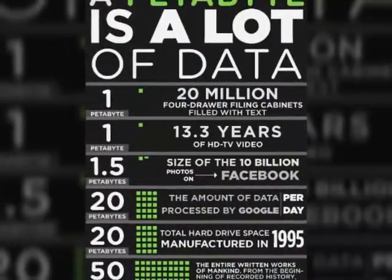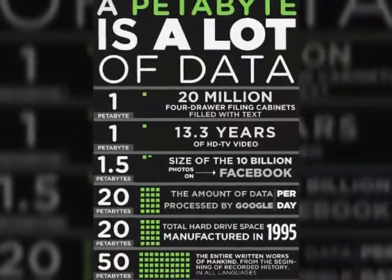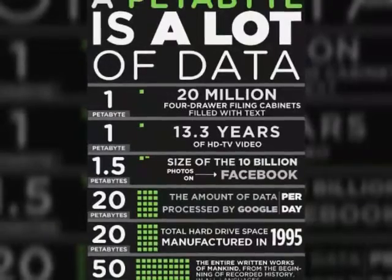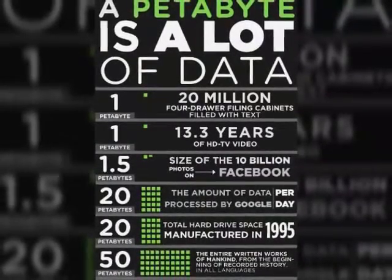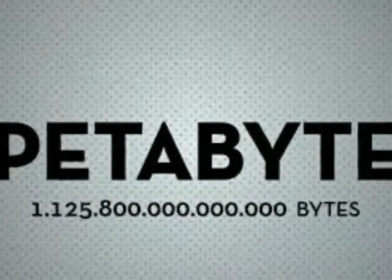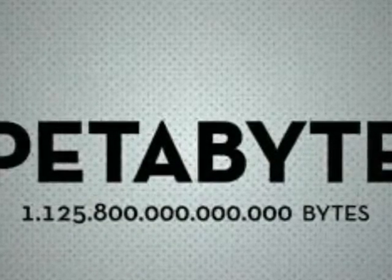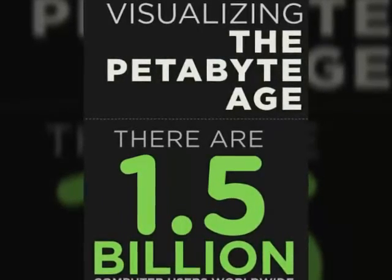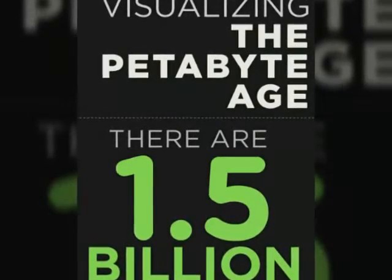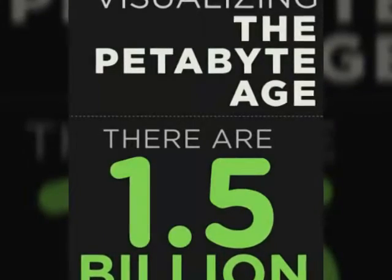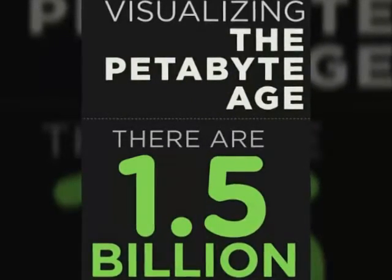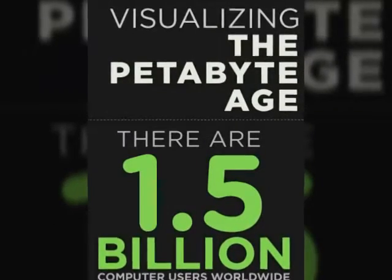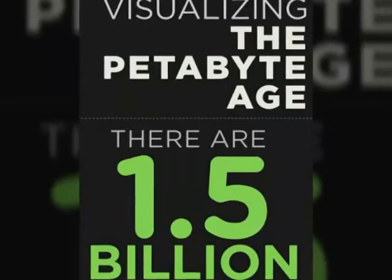These numbers are getting huge. A petabyte is 1,025,899,906,842,624 bytes — or just say 1,024 terabytes. The examples are mind-blowing. You could play a 1 megabyte, 4-minute song for 2,000 years straight. If you don't think that's big enough, if you counted all the bits per second it would take 285 million years. Or take the DNA of each human in the USA and clone it twice.